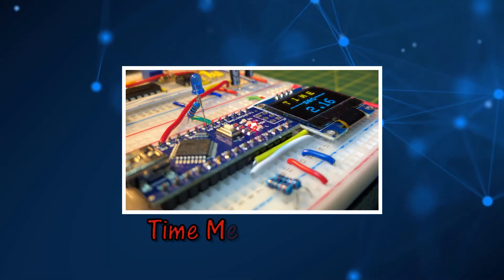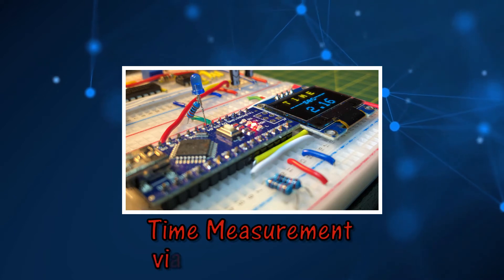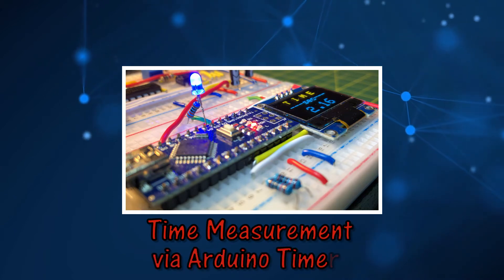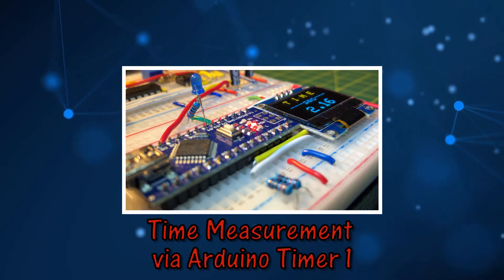In this video, ATMega328 Timer 1 is programmed to measure the time between two consecutive pulses input to Arduino's digital pin.